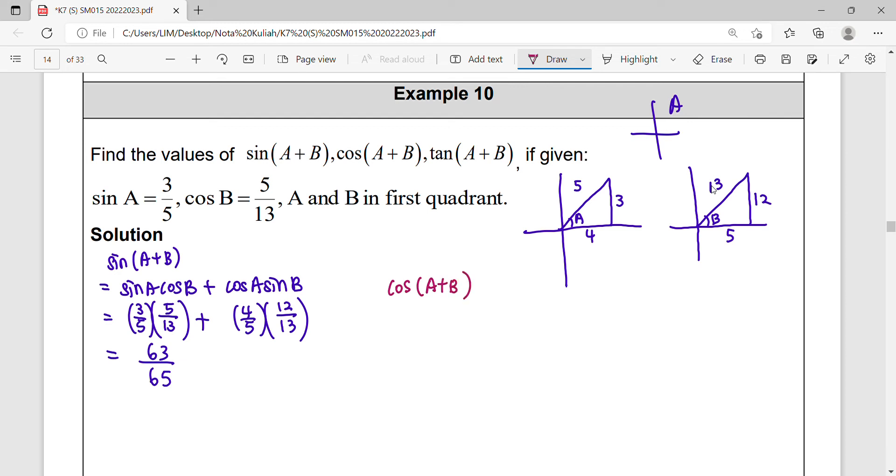Then we go for cosine compound angle A plus B. So use your formula, cos A cos B. When you're having operation cosine, it will be minus. Reverse your operation, it becomes sine A sine B.